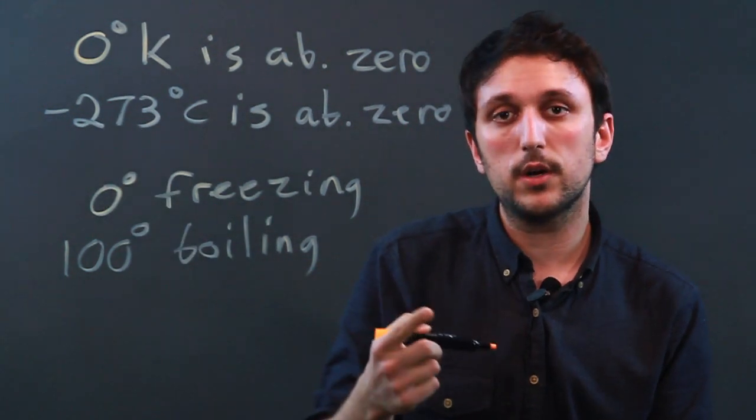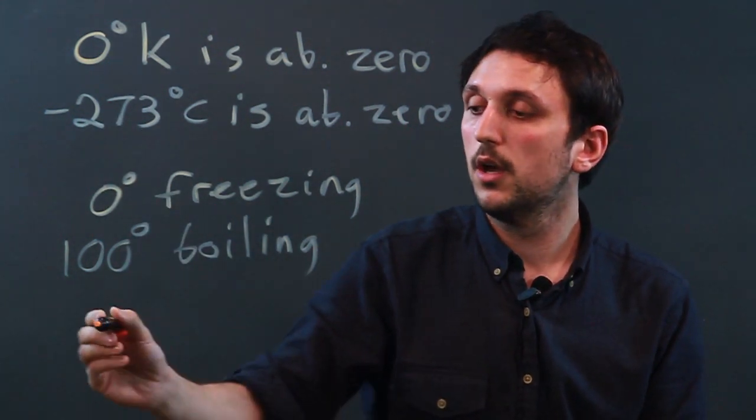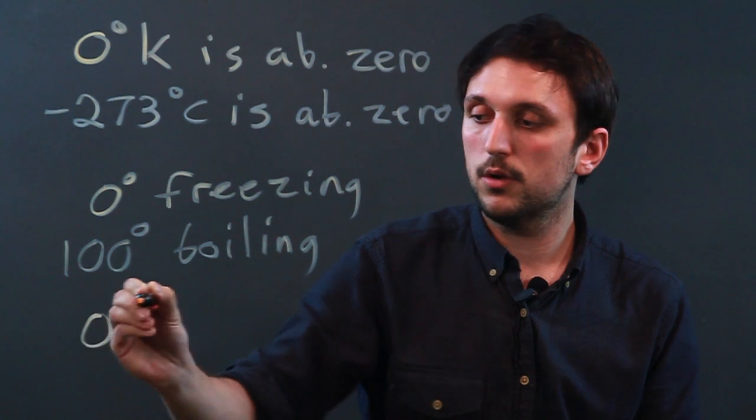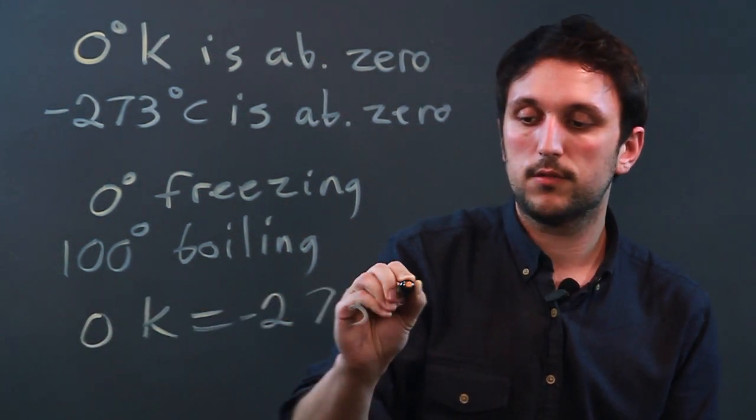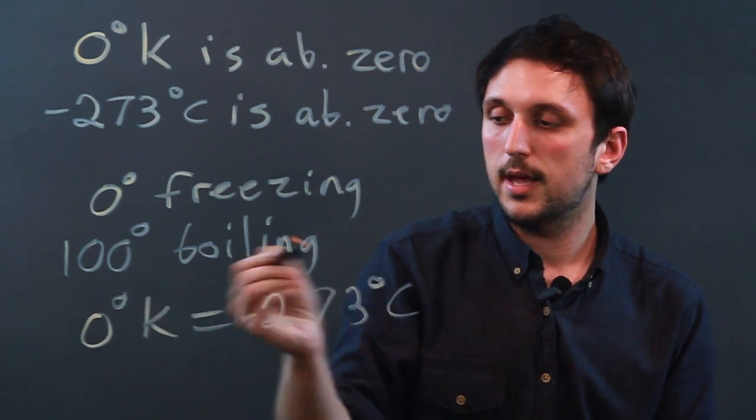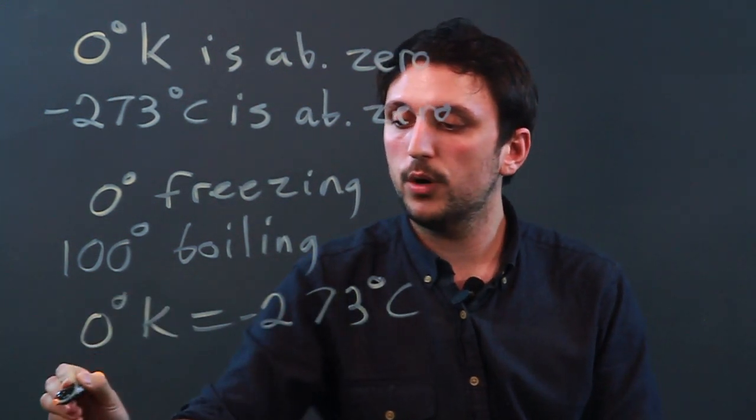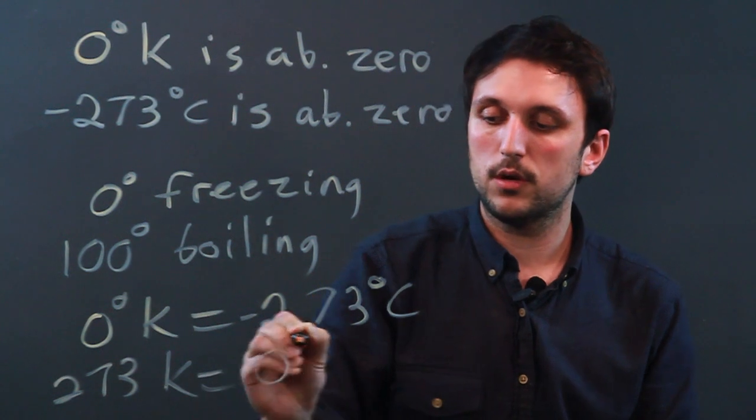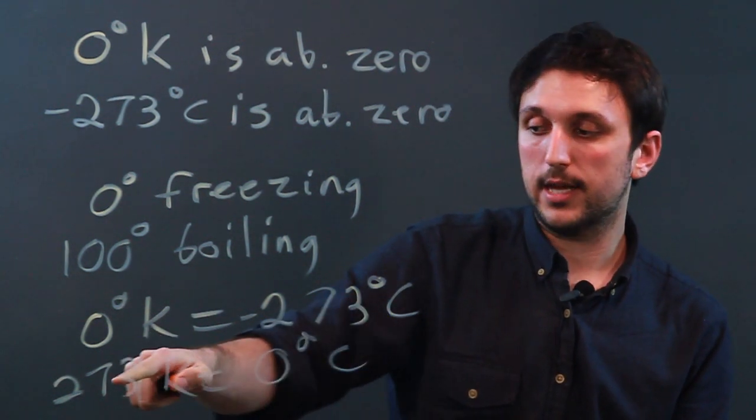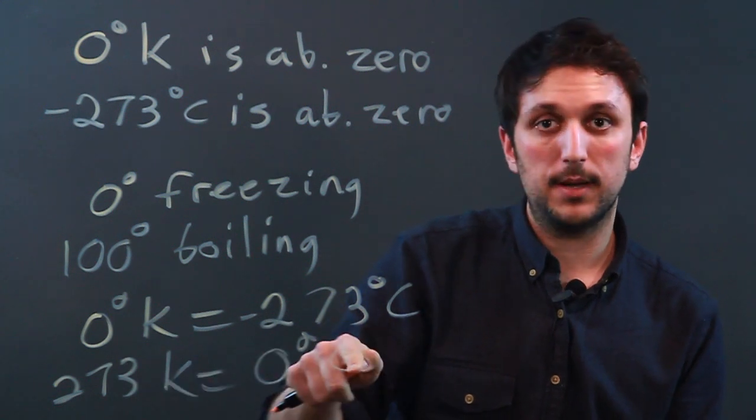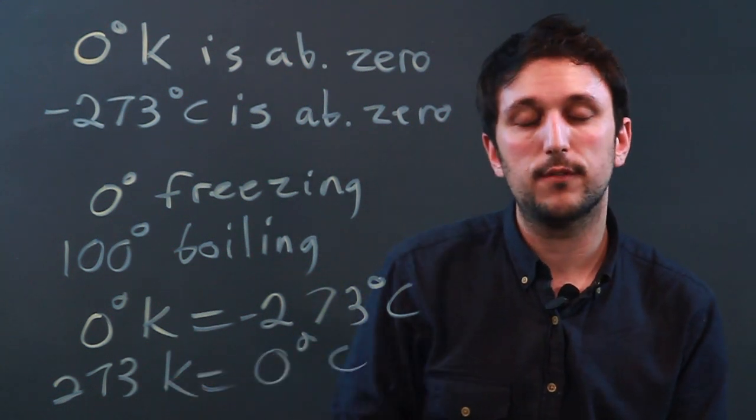And remember, when you're converting from Kelvin to Celsius, well, we say if zero Kelvin equals negative 273 Celsius, and that would mean that 273 Kelvin equals zero Celsius, we just add 273 to Kelvin. If we want to convert from Kelvin back to Celsius, we subtract 273.